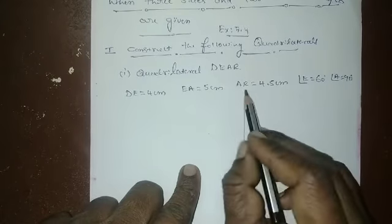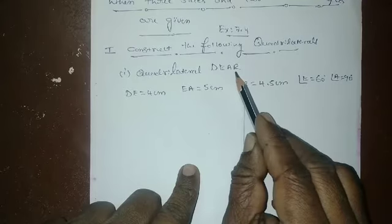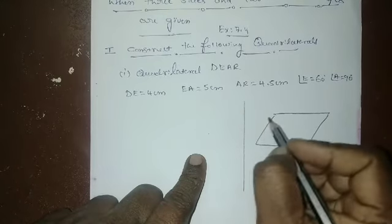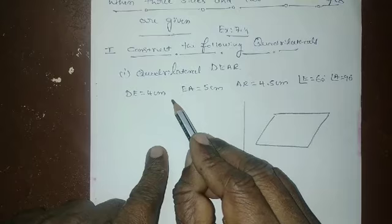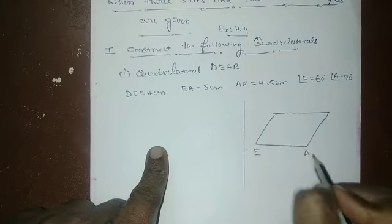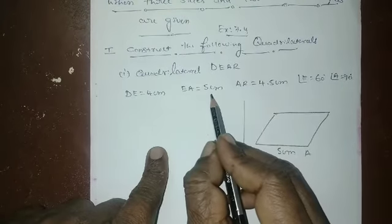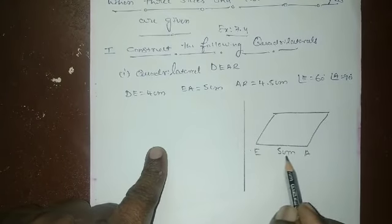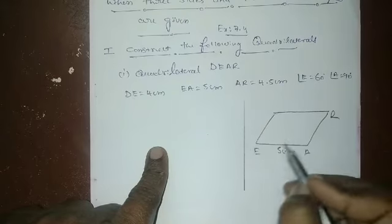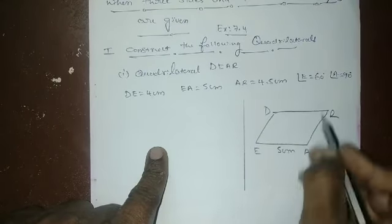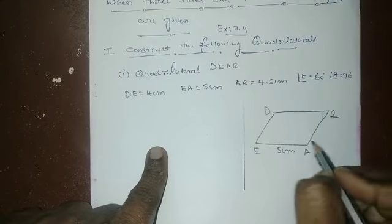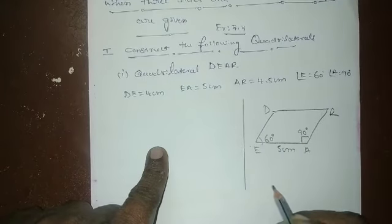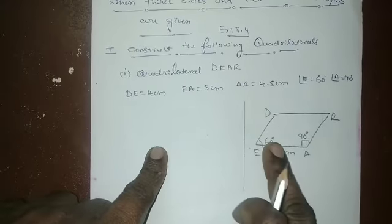What is the name of this quadrilateral? DEAR. Which one is the biggest side? EA is 5 cm. The sides are 4, 5, and 4.5 cm. The angle at E is 60 degrees and the angle at A is 90 degrees. A 90-degree angle makes an L-shape in the rough diagram.